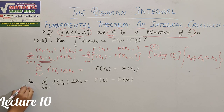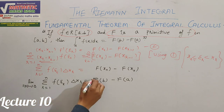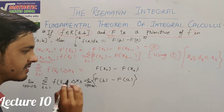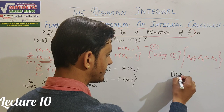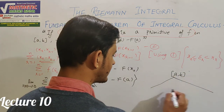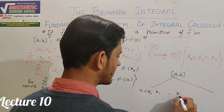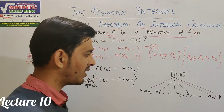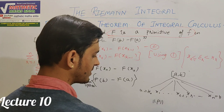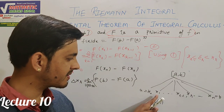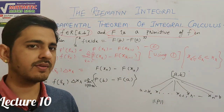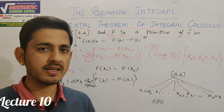Now we apply a limit on both sides: limit as norm(P) → 0. The norm is the length of the largest sub-interval — as norm tends to 0, the sub-interval lengths all tend to 0.